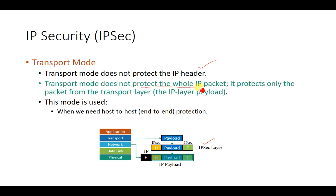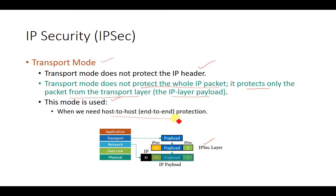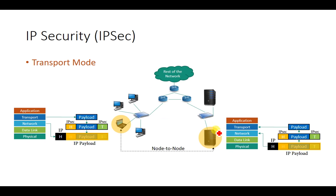In transport mode, the whole IP packet is not protected — only the payload from the transport layer is protected. This mode is used when we need host-to-host protection. Looking at the bigger picture of the internet architecture, this node communicates with another node through switches and routers, and the network layer provides node-to-node delivery of packets.